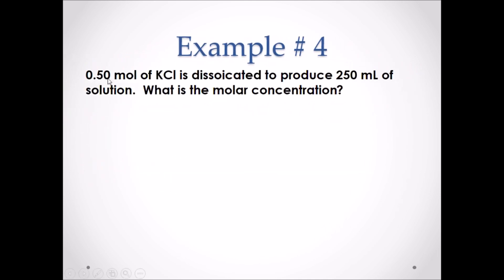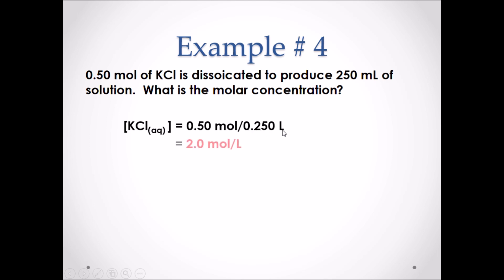Example 4: 0.50 moles of KCl is dissociated to produce 250 milliliters of solution. What is the molar concentration? Molar concentration equals moles divided by liters: 0.50 mol divided by 0.250 L equals 2.0 moles per liter. Note that square brackets are used to denote molar concentration.